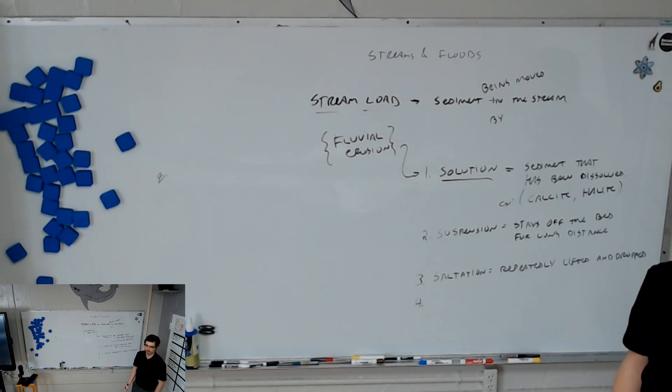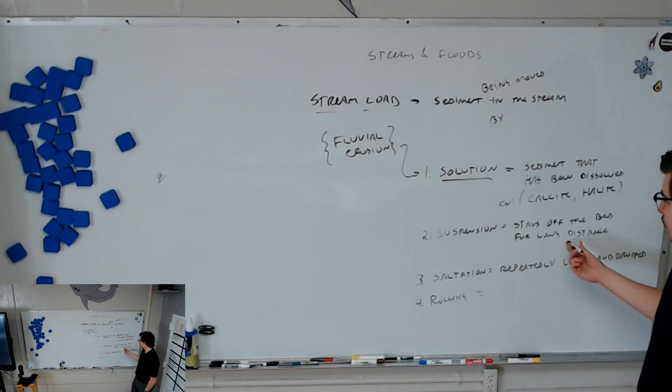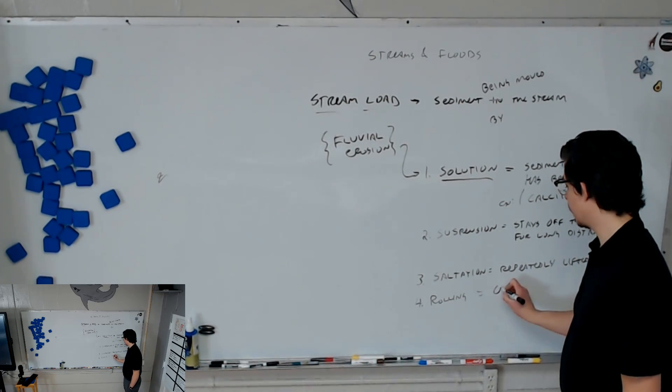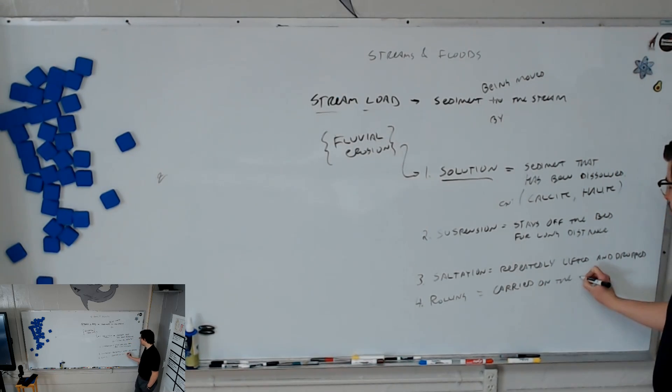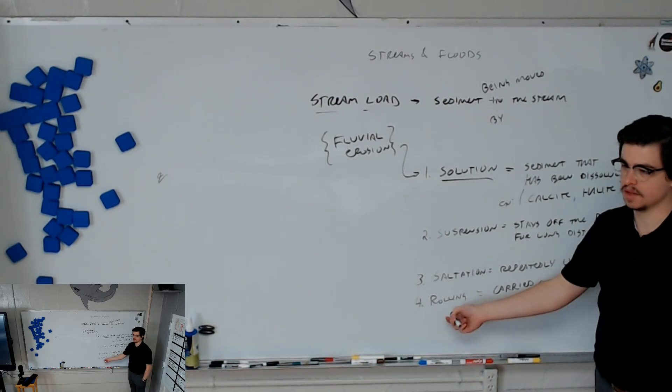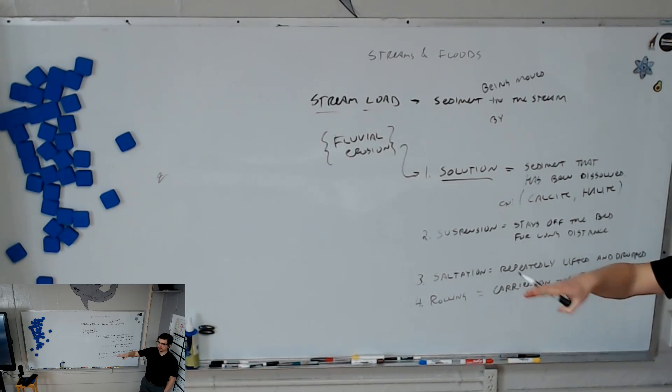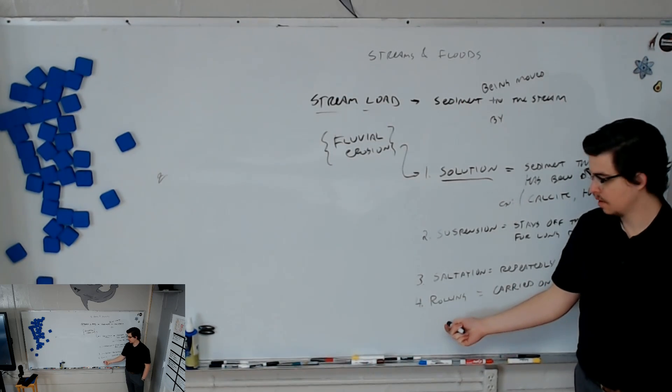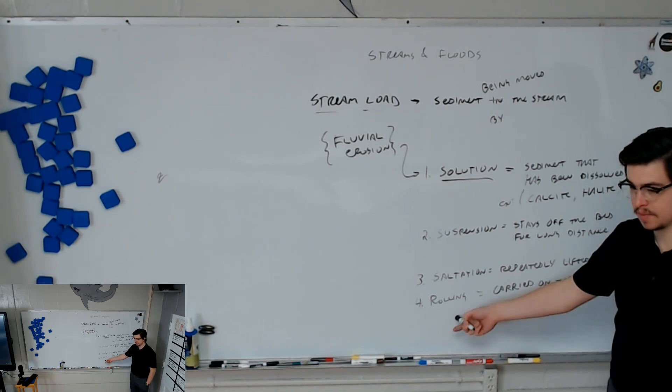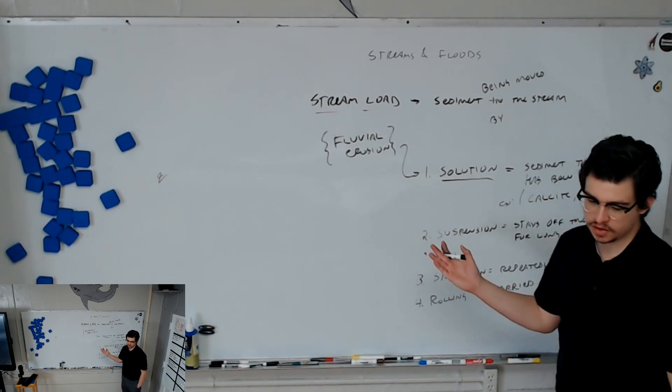Saltation is where it's repeatedly lifted and dropped, right? Giving it a kind of jumping motion, which is where, remember, we talked about how the word saltate comes from the same root Latinate word as sauté, which is when you jump the little onions in the pan, right? It doesn't have to be onions. And then the fourth, what happens to the largest particles that are being moved? Rolling. So in contrast to suspension, where they were off the bed for long distances, this is where they're carried on the bed. Carried on the bed.